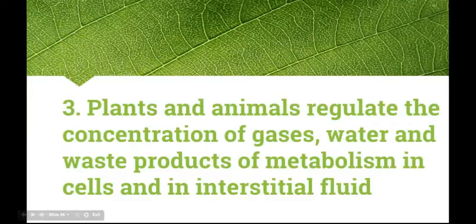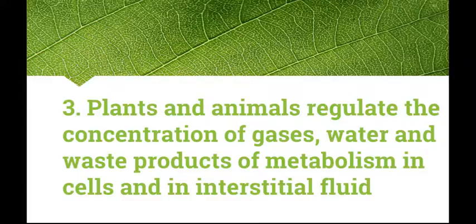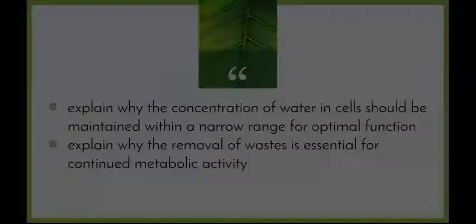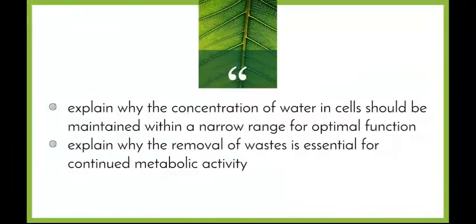We're now up to section three of the syllabus, which says that plants and animals regulate the concentration of gases, water and waste products of metabolism in cells and in interstitial fluid. So throughout the rest of this unit, these are the things we'll be looking at - how plants and animals keep the concentrations of these things at necessary volumes or concentrations. The first two dot points are: explain why the concentration of water in cells should be maintained within a narrow range for optimal function, and explain why the removal of wastes is essential for continued metabolic activity.